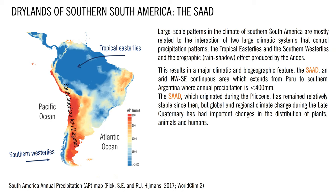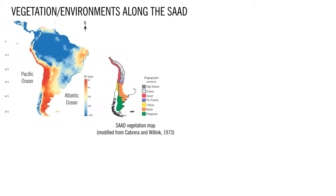But global and regional climate change during the late Quaternary has had important effects on the distributions of plants, animals, and humans. Given its latitudinal extension, the South American Arid Diagonal includes a great diversity of environments and plant communities characterized by the dominance of shrubs with scarce cover, low richness, but a high number of endemisms.